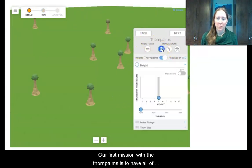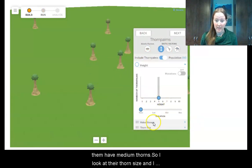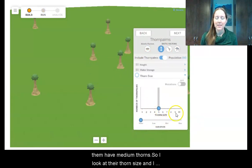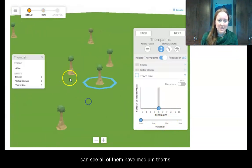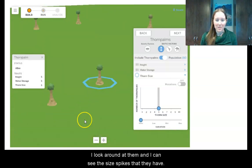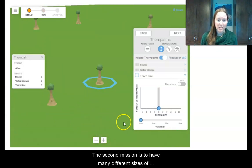My first mission with the thorn palms is to have all of them have medium thorns. So I look at their thorn size and I can see all of them have medium thorns. So then I look around at them and I can see these little spikes on them and the size thorns that they have.